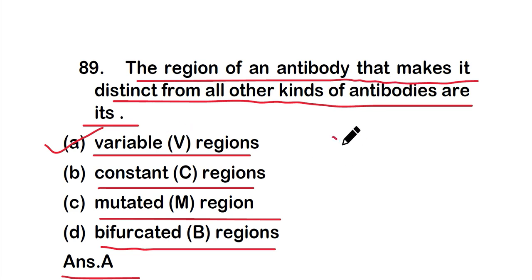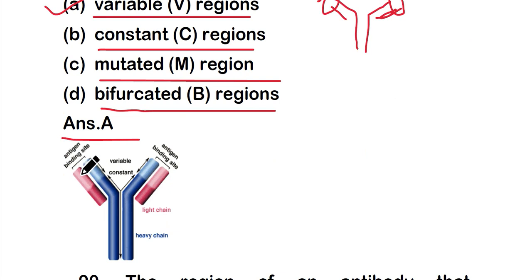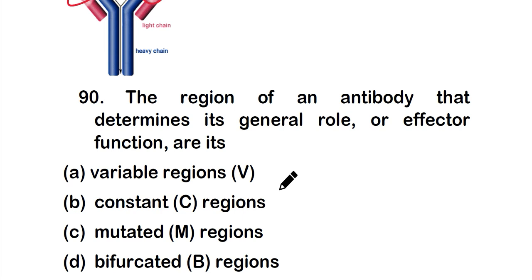The variable region is present in both the heavy chain and light chain of the antibody, and this is where antigens bind. The antigen binding site is the portion where the variable region is present in both the heavy chain and light chain.